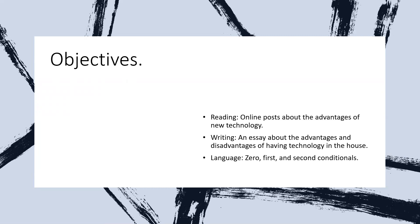So the objectives are: first of all we have the reading part, and it's all about online posts about the advantages of new technology. Then we have the writing part, about an essay on the advantages and disadvantages of having technology in the house. And the last thing is the grammar part, about the zero, first, and second conditionals.